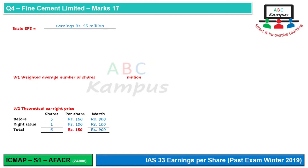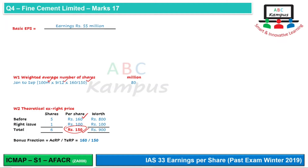The theoretical ex-right price (TERP) comes out to Rs. 150, meaning after the right issue the share price should theoretically be Rs. 150. The bonus fraction formula is: actual cum-right price divided by theoretical ex-right price, i.e., 160 divided by 150. This is our bonus fraction. Now we calculate the weighted average number of shares: January to September we had 100 million shares for 9 months, multiplied by the bonus fraction 160/150. For October to December, new shares issued bring the total to 120 million, outstanding for 3 months. Total weighted average shares come to 110 million.